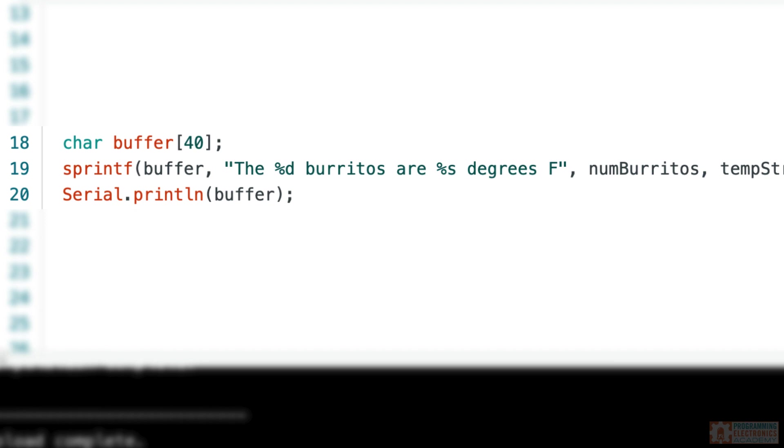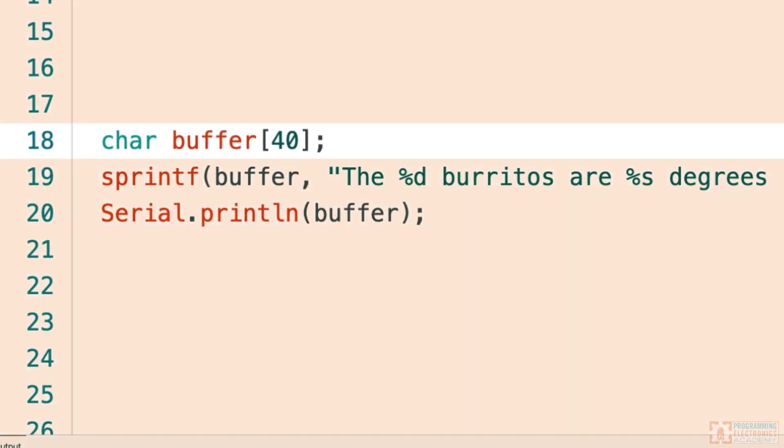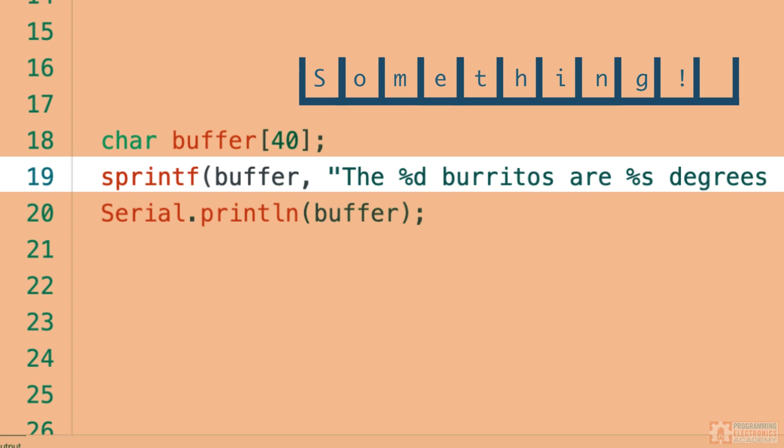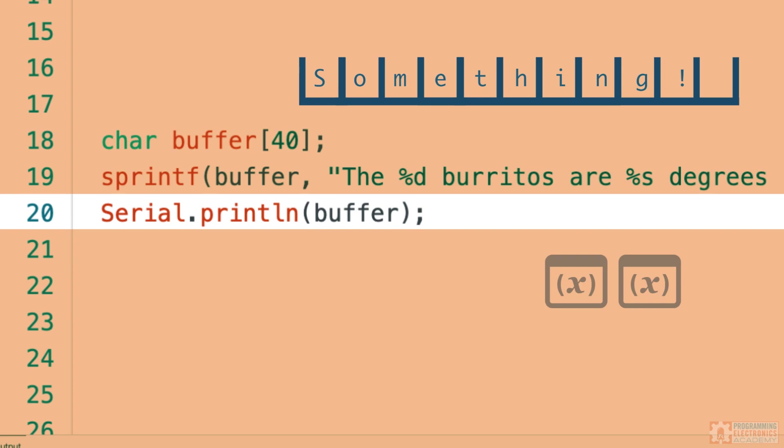Here are the three lines of code you'll need. First, you need a character array to save the output string into. Then you need the sprintf function, which is going to take some text and variables and combine it into a single string. Finally, we'll use the serial print function to display the formatted string.